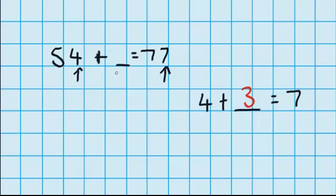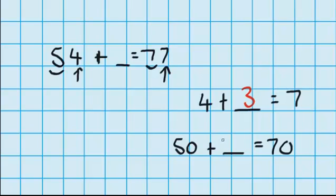Let's go over to the tens now. Here I've got 5 tens and here I've got 7 tens, so I'm thinking 50 plus what will get me to 70? And I know that 50 plus 20 equals 70. So now we just need to look at how much we added: we added 3 ones and we added 2 tens, or 20. So now I need to combine these two amounts: 20 plus 3 equals 23. So 54 plus 23 equals 77.